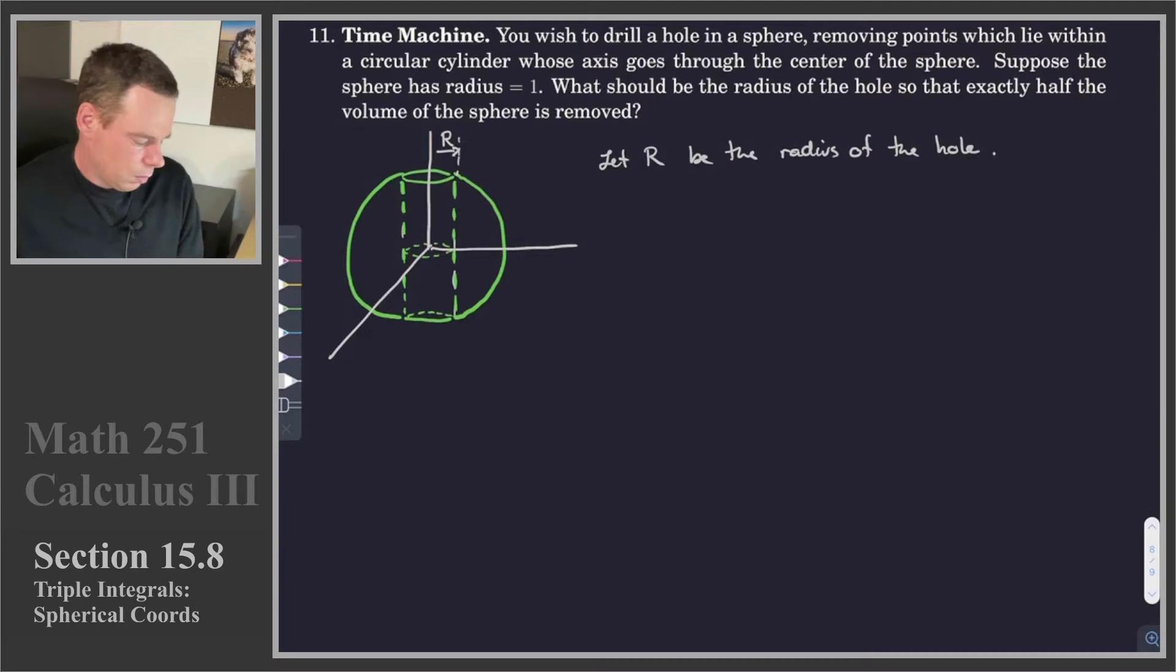Part of this is to try to figure out, okay, what set of coordinates do I want to use? Do I want to use rectangular? Do I want to use cylindrical? Do I want to use spherical? What does the region look like? How can I set up the integral? So a lot of questions are going on here that we're going to need to know the answer to.